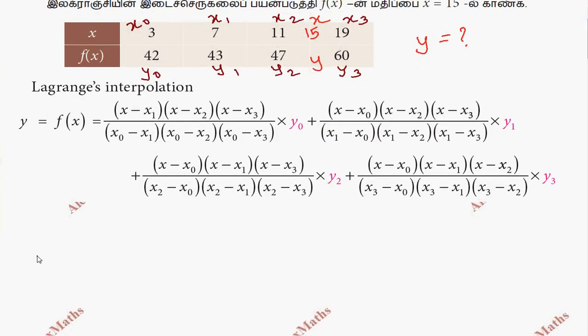The first term is (x minus x1)(x minus x2)(x minus x3) divided by (x naught minus x1)(x naught minus x2)(x naught minus x3) times y naught. Substituting: (15 minus 7)(15 minus 11)(15 minus 19) equals (8)(4)(minus 4) in the numerator. The denominator is (3 minus 7)(3 minus 11)(3 minus 19) equals (minus 4)(minus 8)(minus 16), then multiply by y naught which is 42.